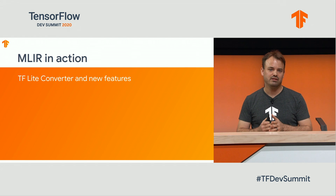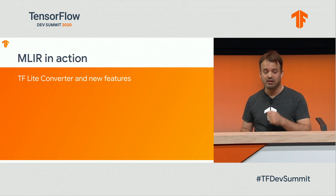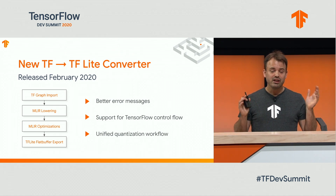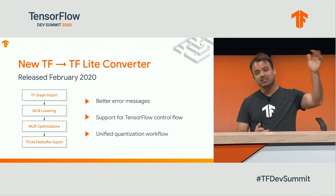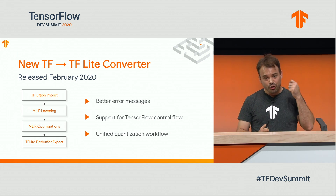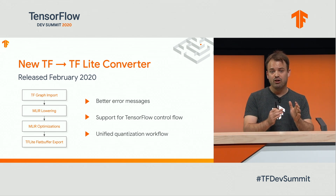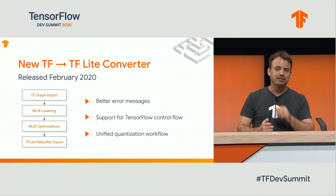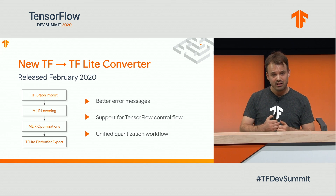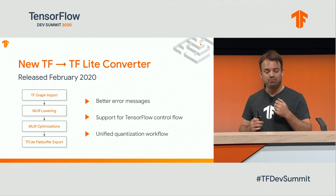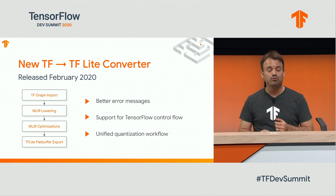Now let's look at MLIR in action. We're specifically going to look at the new TF Lite converter and the new features it provides. The new TF to TF Lite converter launched just in February this year. Starting from a TensorFlow graph model, importing it to MLIR, doing all the optimizations and legalizations, and then finally exporting to a TF Lite flat buffer for the TensorFlow Lite runtime to execute — all of this with better error messages, so we can find out what went wrong during conversion and give more actionable feedback. It also adds support for TensorFlow Control Flow, so you can finally deploy models with Control Flow on the edge, and a new unified quantization workflow.